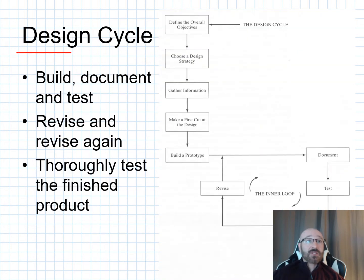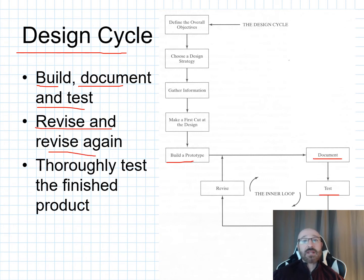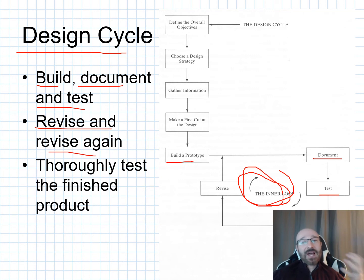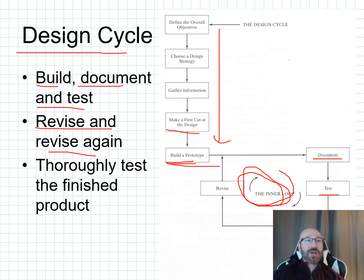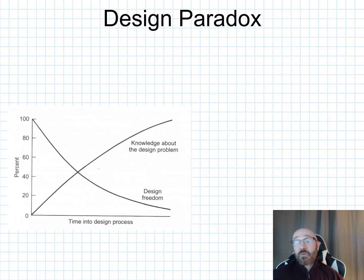Going back to the design cycle: build, document, and test. Then revise and revise again — staying in that loop, asking what worked, what didn't, and what tweaks can be made. You spend a lot of time in this loop. It's very rare to go through the first stage, gather information, do your first cut, build the prototype, test it, and have it work. You'll build a rough prototype, document like crazy, test like crazy, and keep revising before eventually going back in to test again.